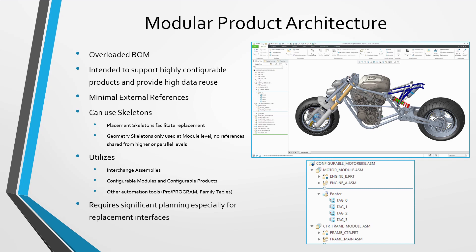Tools available in Creo Parametric to implement modular product architecture include interchange assemblies, configurable modules and configurable products, and also Pro Program and family tables. Similarly to top-down design, this approach requires a lot of thinking and work upfront, especially for figuring out the interfaces for swapping out one component with another.